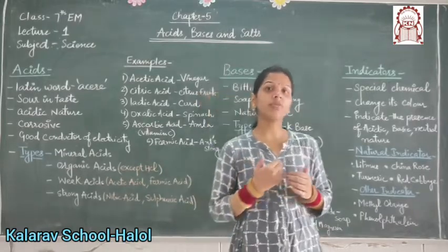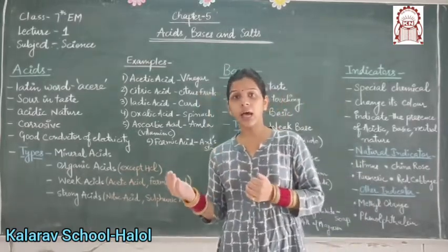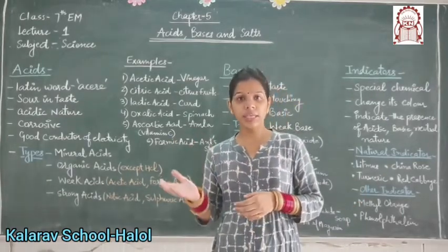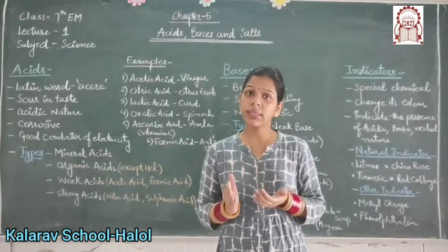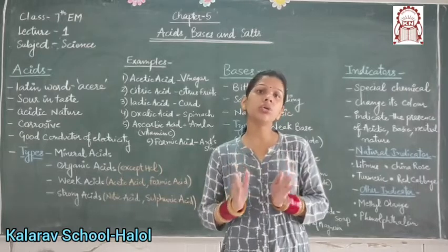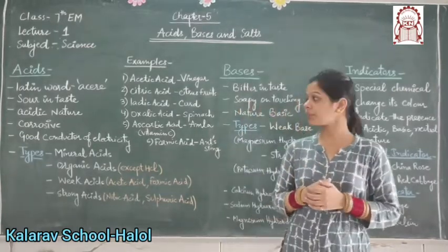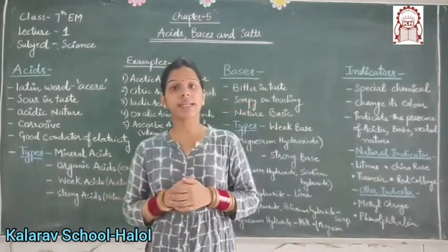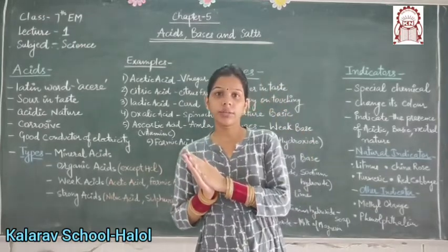There are many properties of these acids. Acids are corrosive in nature. What does corrosive mean? As it falls on our skin, it burns the skin. As it falls on our clothes, it tears or burns the clothes. That's why they are corrosive in nature. Next, acids are good conductors of electricity.